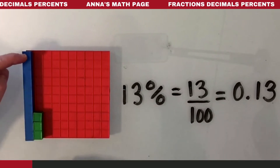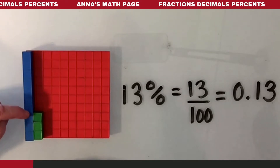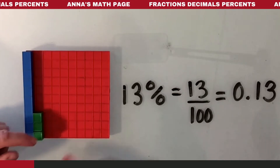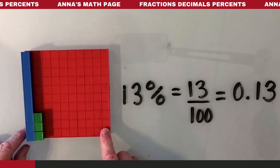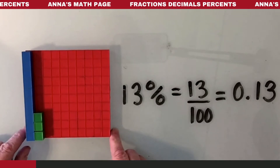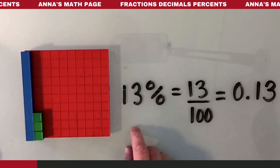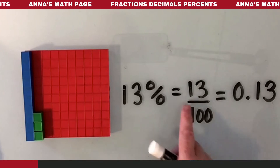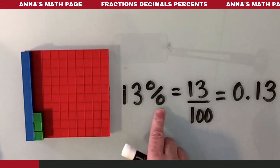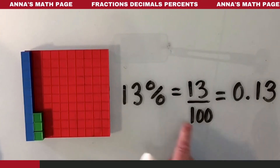There are 13 squares — counting 1 through 13 — 13 squares out of the 100 squares. The big red block has 100 squares in it. And we can write that as 13 out of 100. This really says the same thing: 13 out of 100, 13 out of 100.